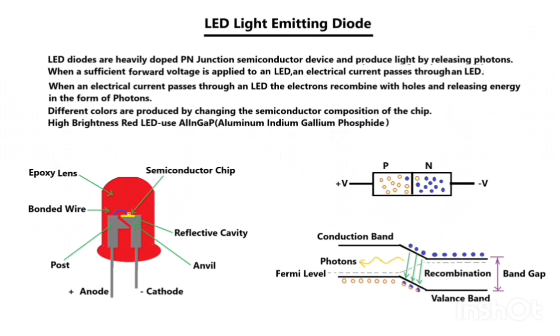Different colors are produced by changing the semiconductor composition of the chip. For a high brightness red LED, use aluminum, indium, gallium, phosphide.